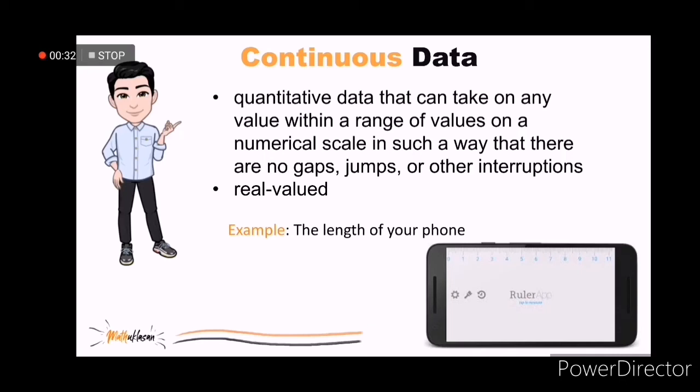All that are not discrete are called continuous data. These are quantitative data that can take on any value within a range of values on a numerical scale coming from numerical instruments or tools. For example, the length of your phone, it could be 5.32 inches.